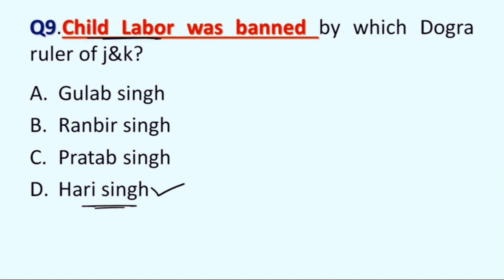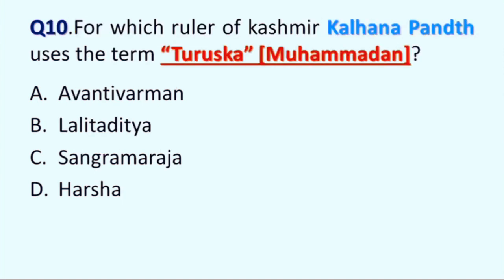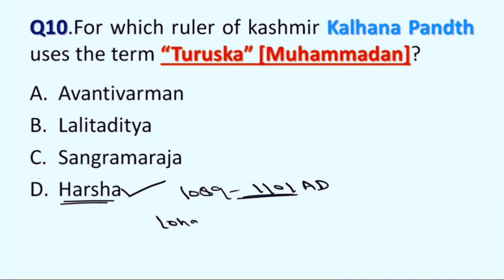Next question is: for which ruler of Kashmir did Kalhana Pandit use the term Turshka, i.e. Mohamdan? Option A: Avanti Varman, B: Lalita Ditya, C: Sangramaraja, and D: Harsha. Correct answer is Option D, Harsha. Harsha ruled from 1089 to 1101 AD and he belongs to Lohara dynasty.